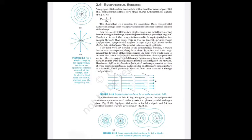An equipotential surface is a surface with a constant value of potential at all points on it. For a single charge q, V = k·q/r = (1/4πε₀)(q/r), so V is constant when r is constant. Therefore, the equipotential surfaces of a single point charge are concentric spherical surfaces centered at the charge.